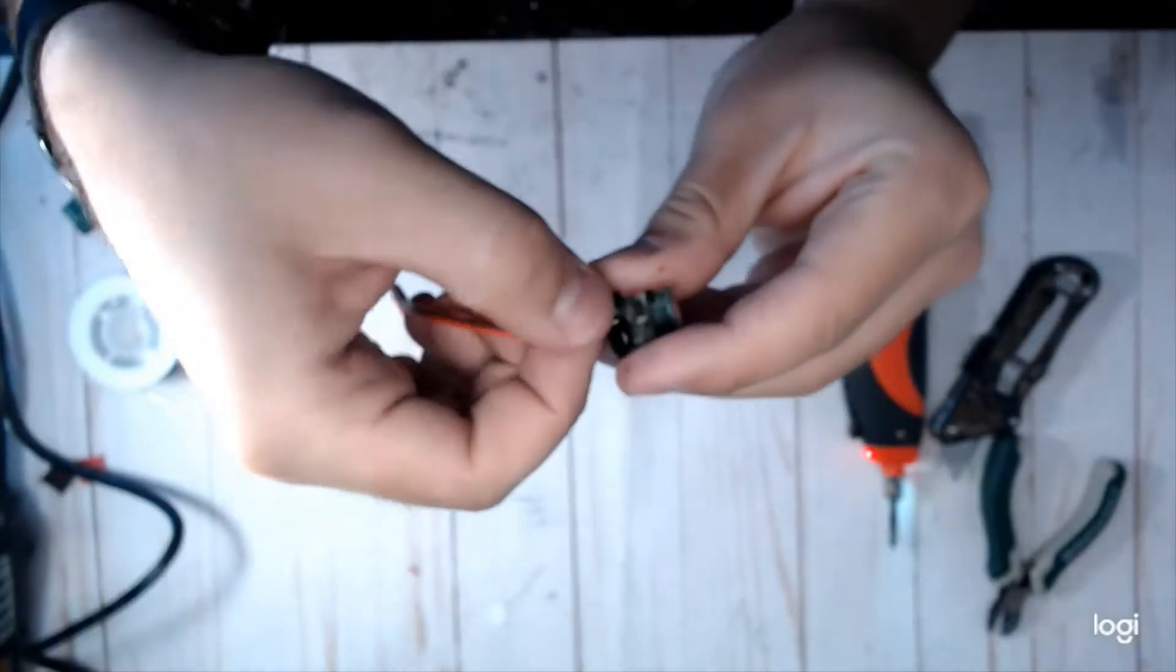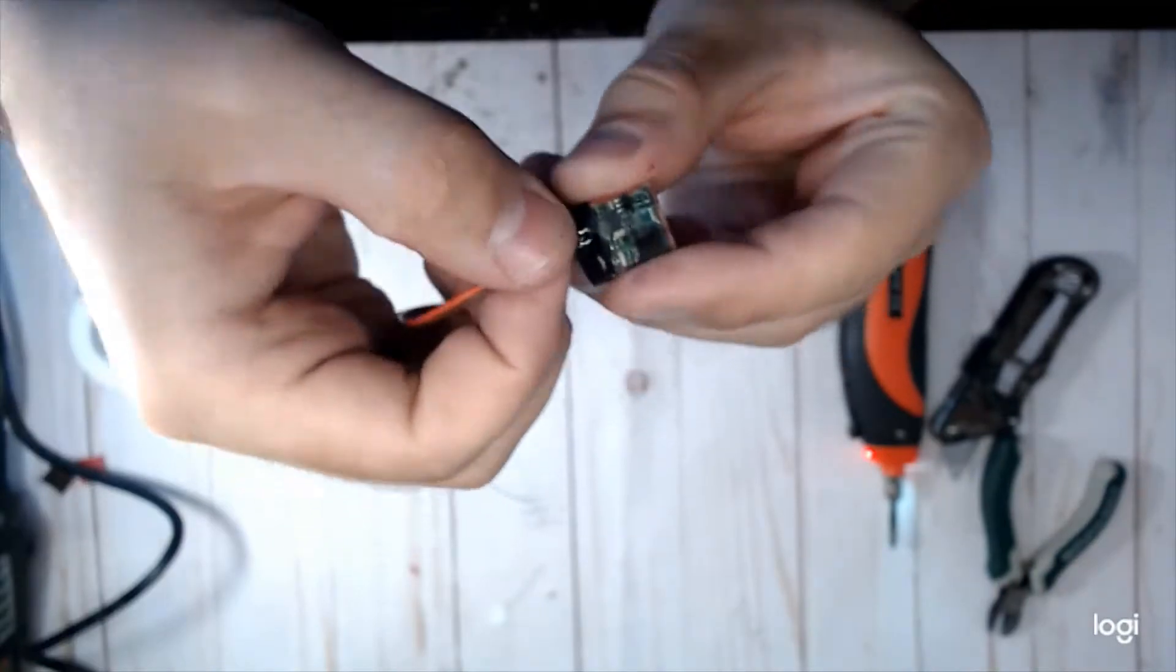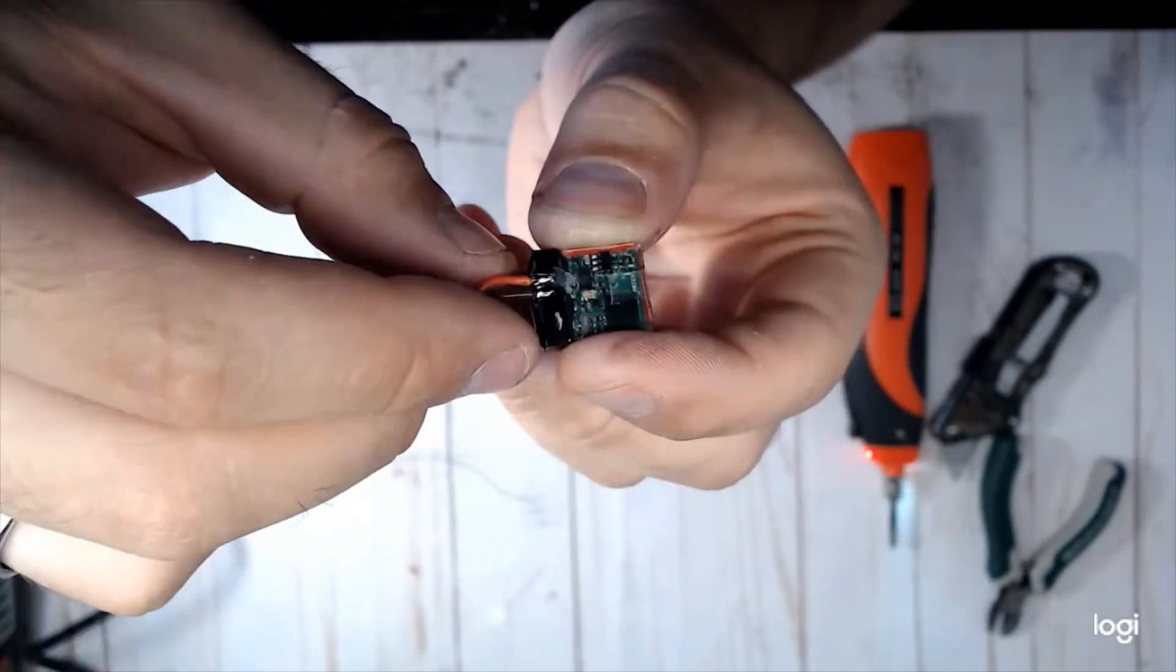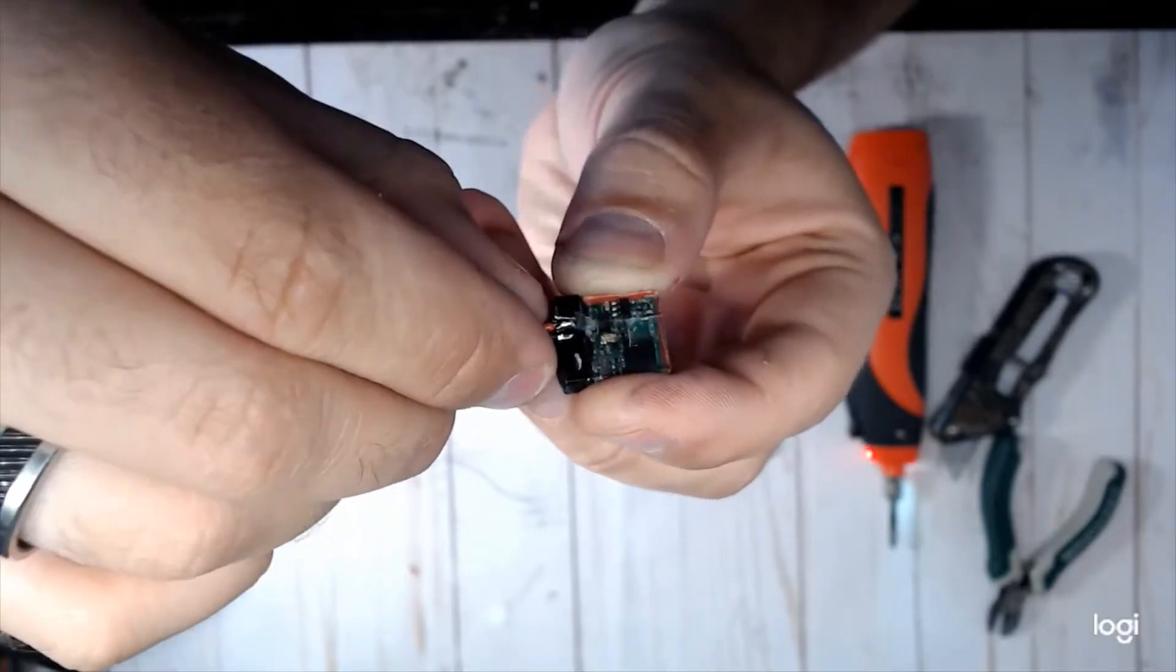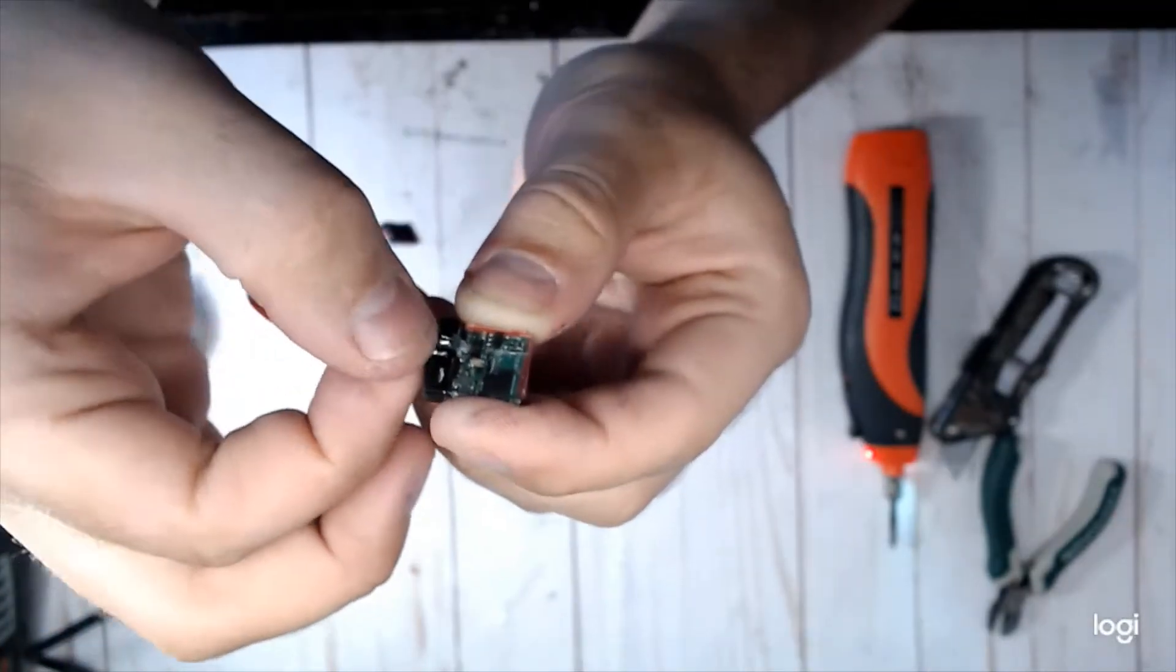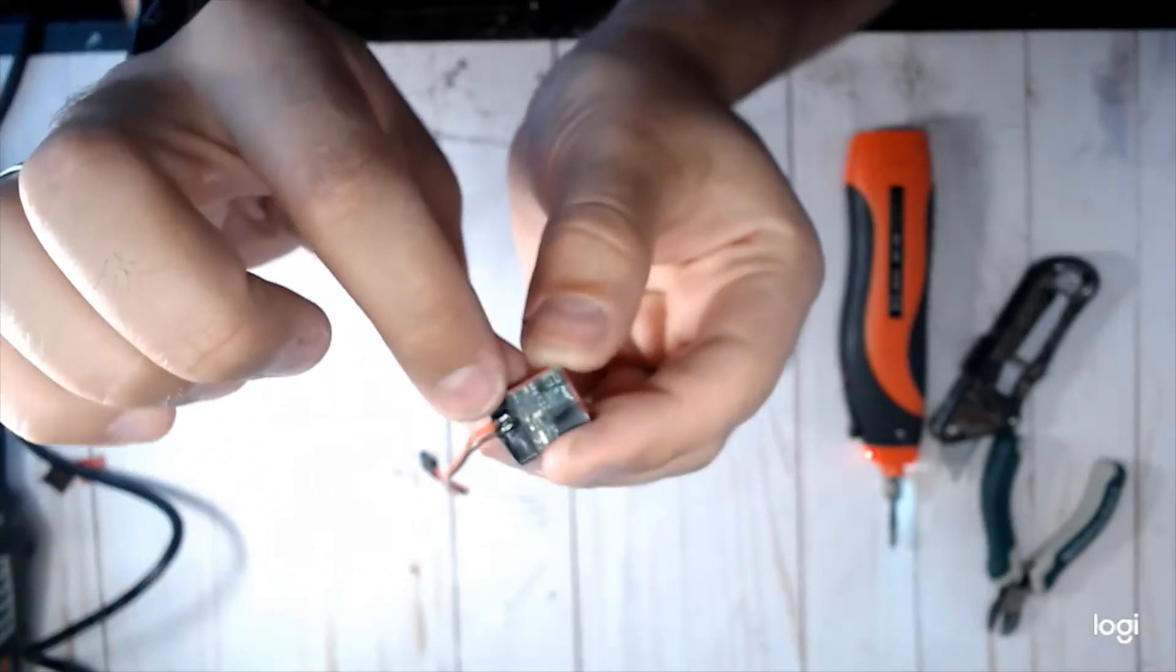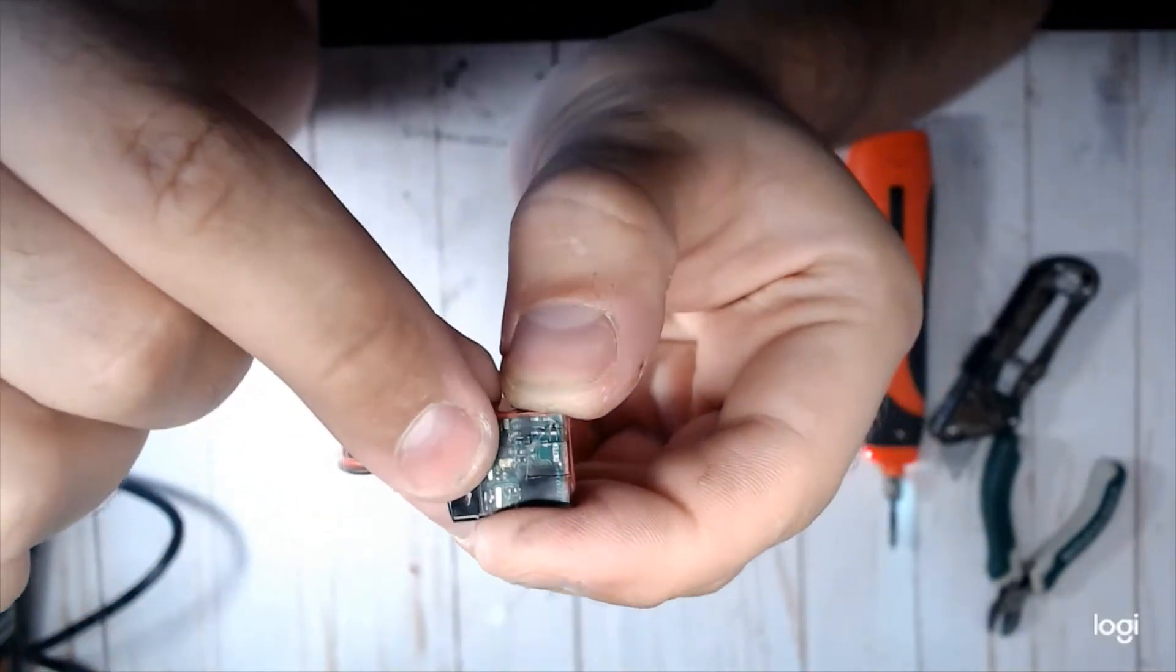But now we still have the same problem as the original transponders, where we have a fairly exposed end here where they can kind of be bent right at that solder joint, and that's not good for durability. So what I'm going to be doing is filling this gap here, see how I created this channel here, I'm going to fill that with hot glue.